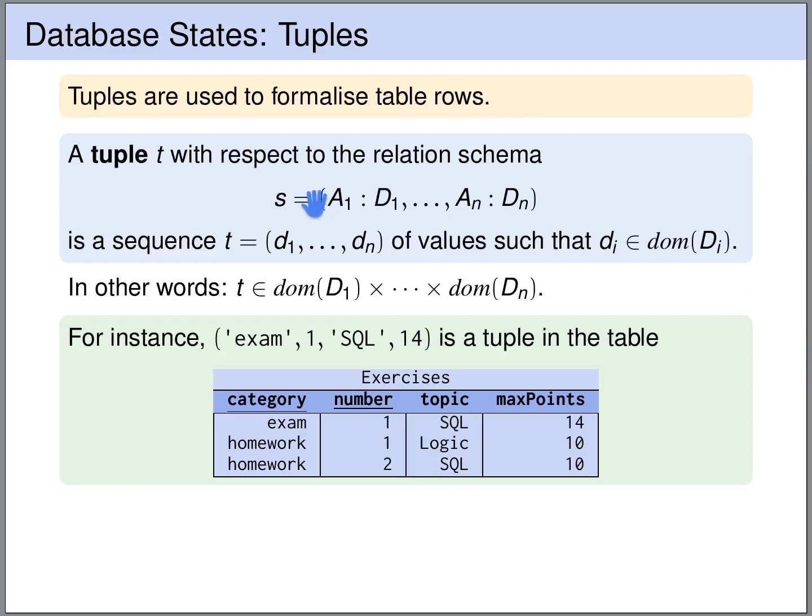Let's say we have a relation schema S, so we have attribute A1 that ranges over domain D1, attribute A2 over domain D2, and so on. Then T is a tuple with respect to this relation schema